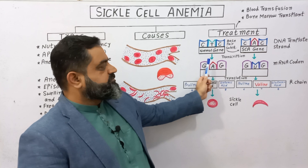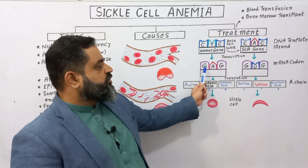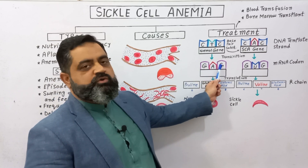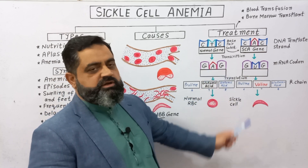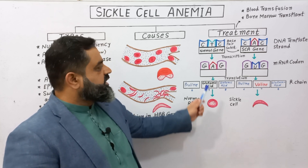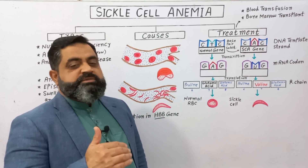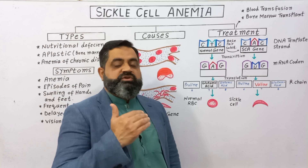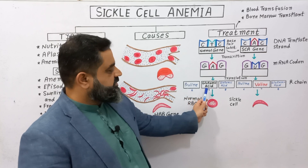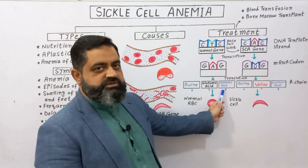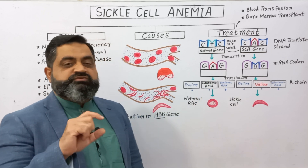In a normal person the HBB gene has the sequence CTC (cytosine-thymine-cytosine). When transcription occurs and mRNA is formed, the complementary codon is GAG (guanine-adenine-guanine). When this mRNA codon is translated into protein, GAG codes for the amino acid glutamic acid. In the beta chain, position six is proline, position seven is glutamic acid, and position eight is also glutamic acid.